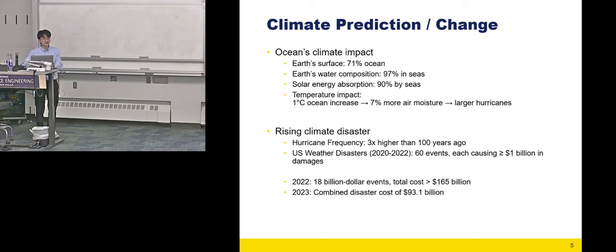When the ocean's temperature rises by one degree Celsius, it makes the air 7% more humid, and this extra moisture generates larger hurricanes. Over the last century, hurricanes have become three times more common compared to 100 years ago, and it causes significant damages. For example, in 2022, hurricane-related damages soared to $165 billion, which is comparable to 1% of the U.S. GDP. It is difficult to prevent or block the hurricane entirely, but better prediction can lead to quicker evacuations and reduce harm to people and properties.